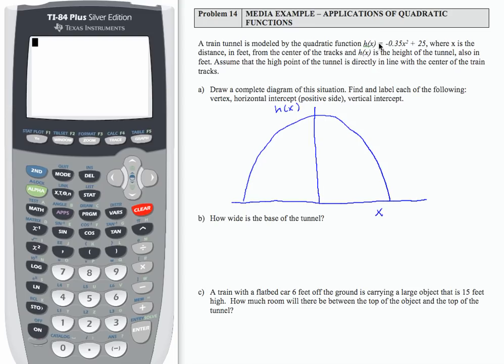Now my function is negative 0.35 X squared plus 25. So if I want to find the vertical intercept, then that's going to be when the input is 0, the output is 25. So this height right here would be 25 feet, or the ordered pair would be 0, 25. So that is my vertical intercept.